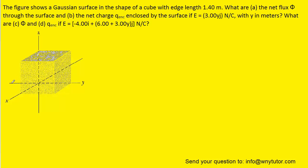The first thing to note about the diagram is that the y-axis is situated horizontally, as opposed to vertically as in most diagrams. In parts A and B, the electric field is acting exclusively as a j-hat component, meaning the electric field acts exclusively in the y-direction.